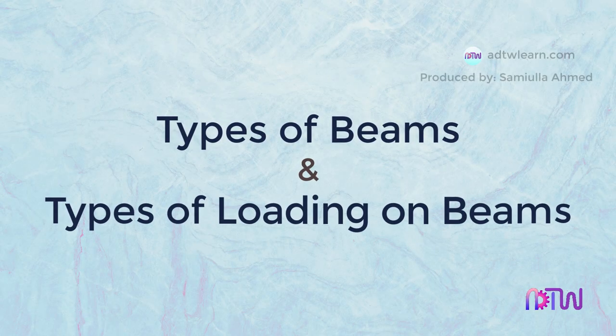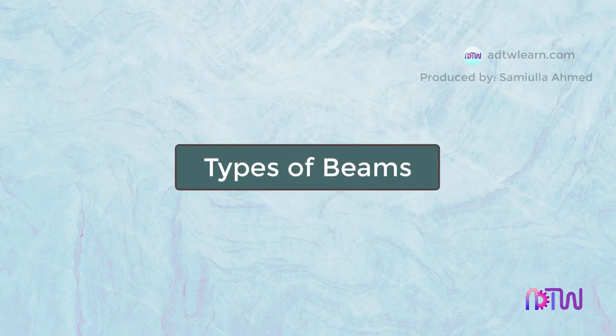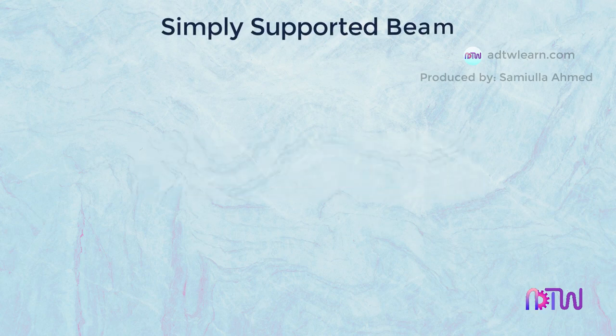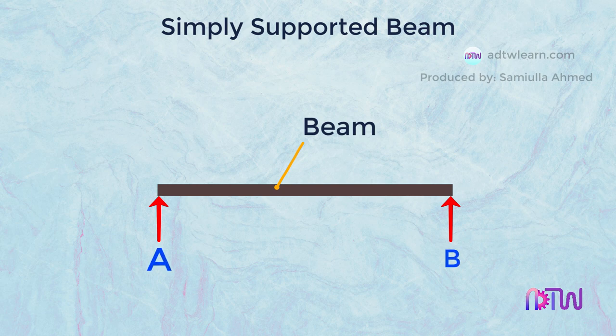Types of Beams and Type of Loading on Beams. Types of Beams: Simply Supported Beam. This beam is resting on two supports, A and B. These supports are at the extreme ends of the beam.